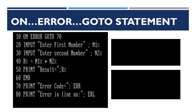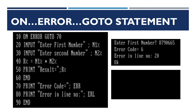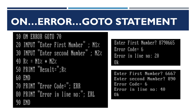When the program is executed, the first number is too large to fit in an integer-type variable, so it gives an error with the code and line number. The second time the program is executed with smaller numbers, an error occurs when the multiplication result does not fit in an integer-type variable.